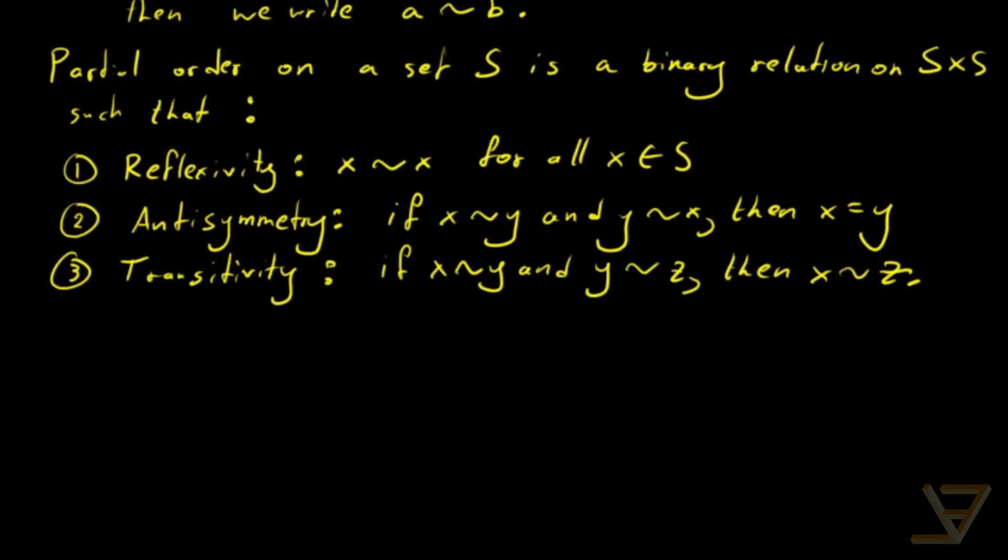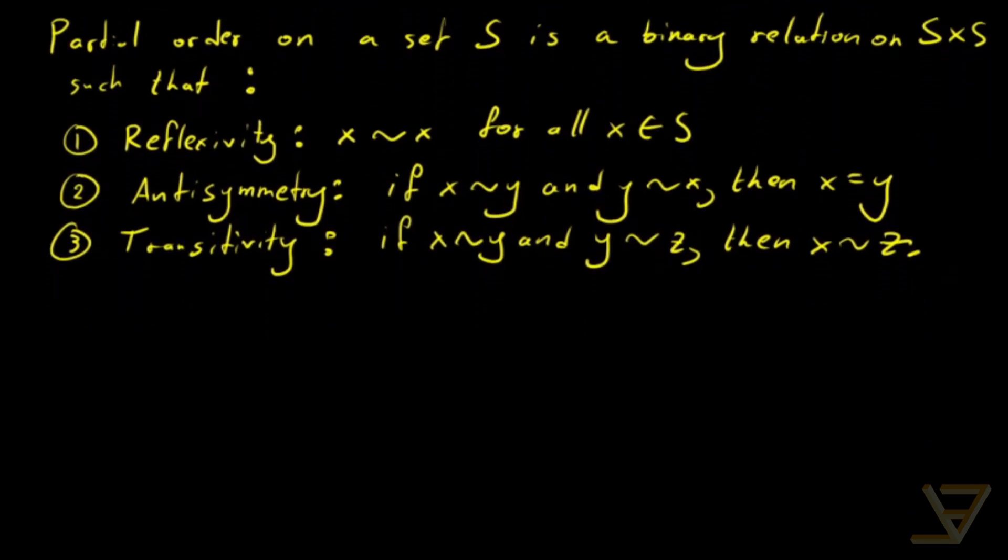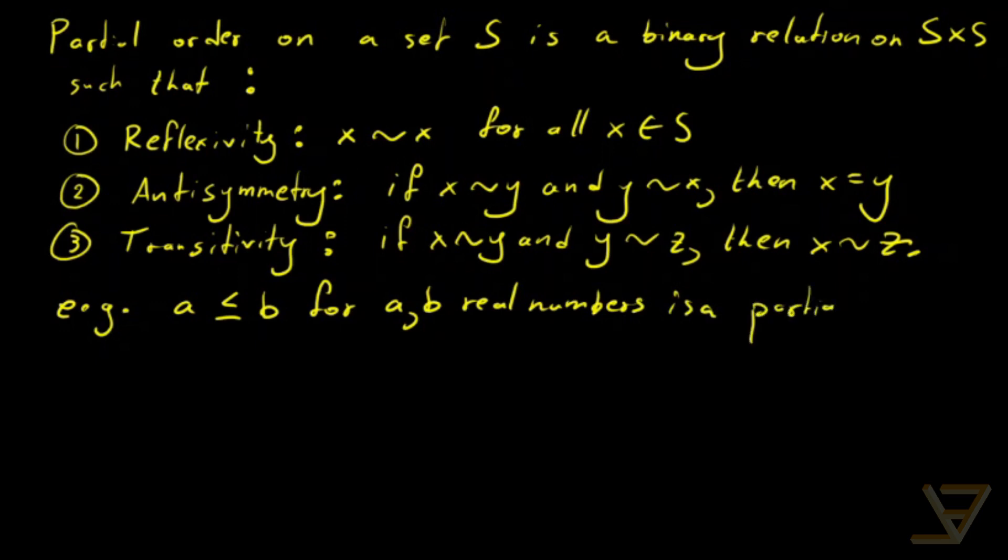These properties might feel familiar to you because, for example, a less than or equal to b for a, b real numbers is a partial order. In fact, it's a total order which implies that it is a partial order.